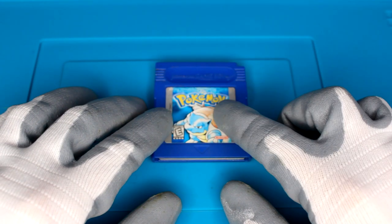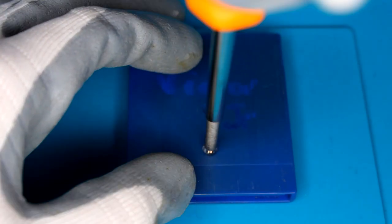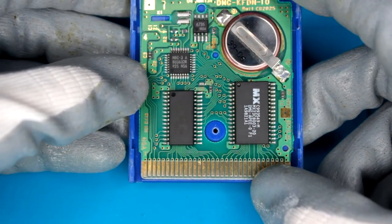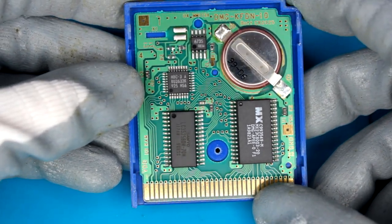So let's open up the Game Boy game and take a look inside. So on initial inspection everything does seem to be okay. Notice that it's got the original battery still which is good.